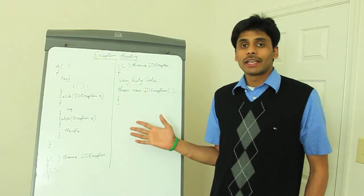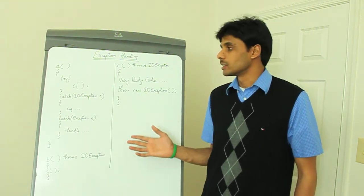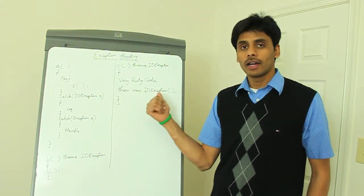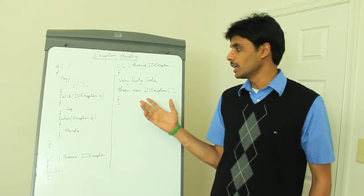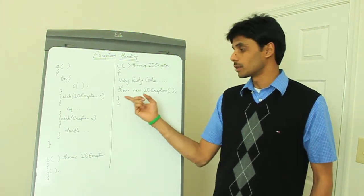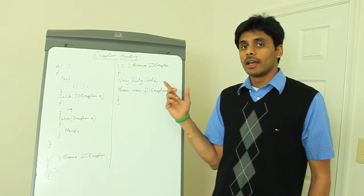What we have here is a pseudo code of three methods, beautifully named A, B, and C. The methods A and B call into method C. They use method C, which throws an IO exception by using the throw keyword when it's not happy.